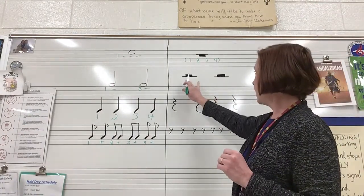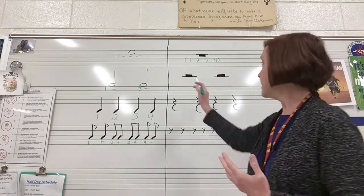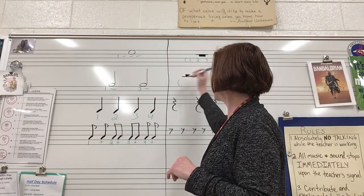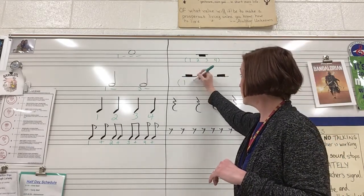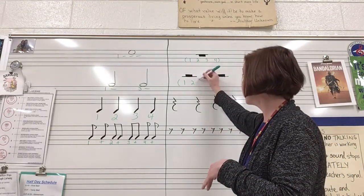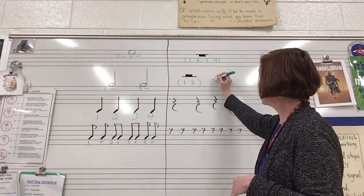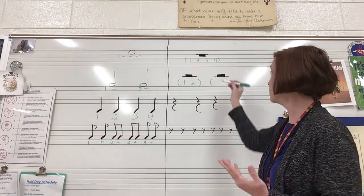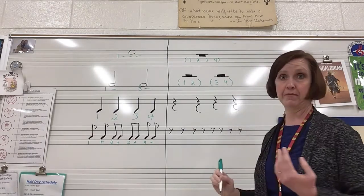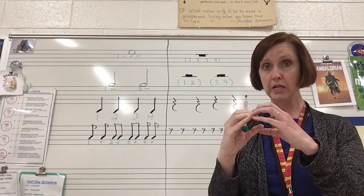If we had two half rests, that works in the same way — each rest gets its own set of parentheses. The first half rest takes up beats one and two, so I write: open parenthesis, one, two, close parenthesis. For the next one it takes up beats three and four: open parenthesis, three, four, close parenthesis. If you had a half rest that took up beats two and three, you would put: open parenthesis, two, three, close parenthesis.